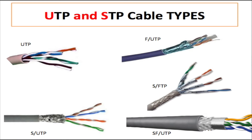Here we have another type of barrier — a metal barrier — and this is called S/UTP. The S stands for shield. This metal shield is better than foil at protecting you from very strong electromagnetic fields. So this shield is preferable if you are in an area with very strong electromagnetic fields, like near power lines.